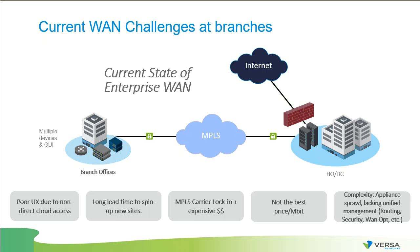The other option is to provide centralized internet access through headquarters, where you have an internet connection and powerful firewalls. But this requires bigger MPLS circuits and much more expensive connections between branch offices and headquarters.